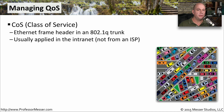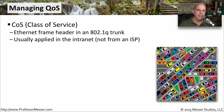There are a number of different standards for quality of service inside of the network packets themselves. One is called class of service. This is inside the frame of the Ethernet and it's part of the header — it's in an 802.1 trunk. So this is something that you would be sending across a trunk connection. This is usually applied in your intranet, since you're not generally trunking from an ISP, so it generally deals with traffic that is inside of your organization.